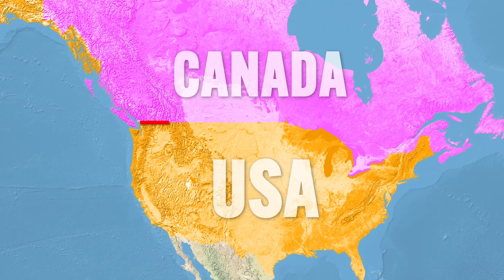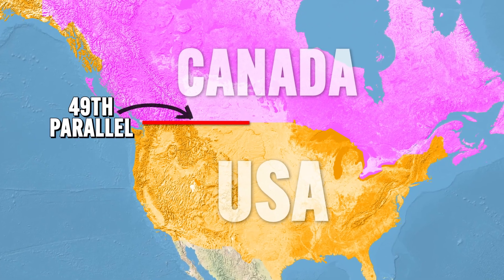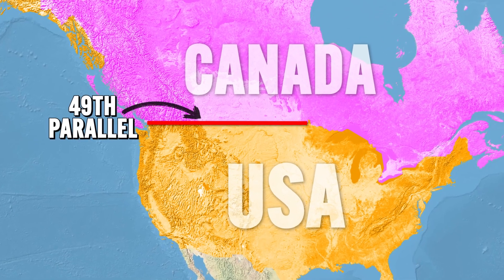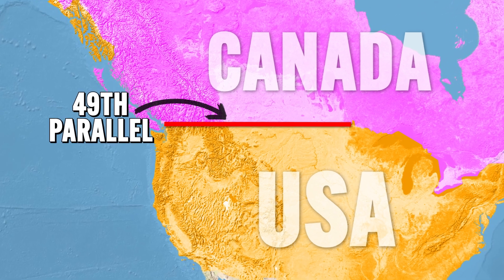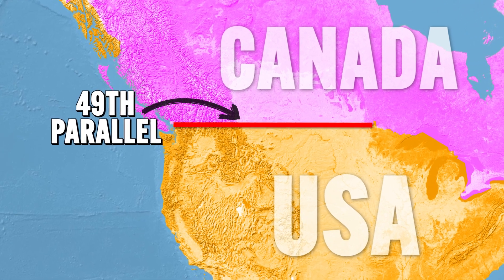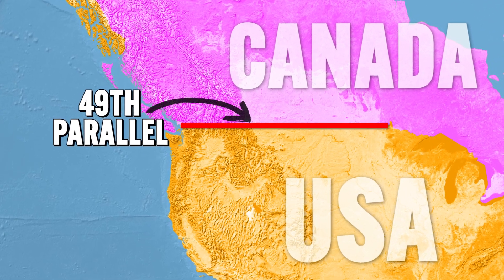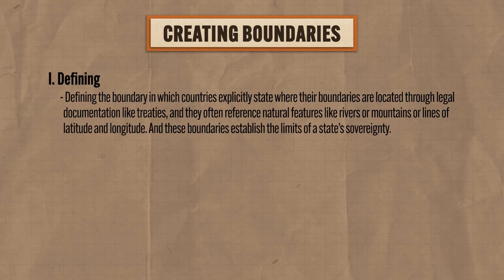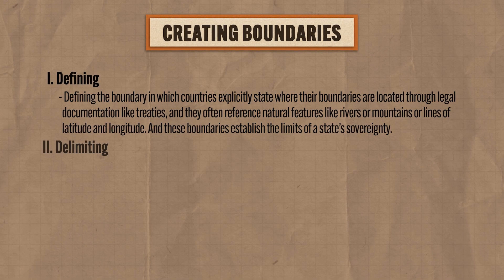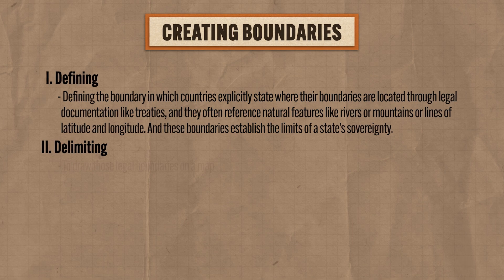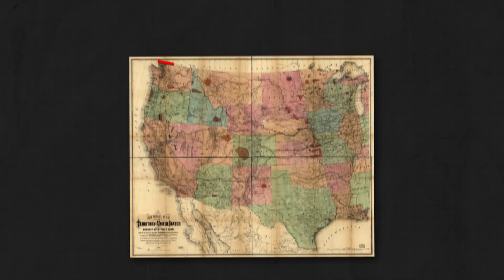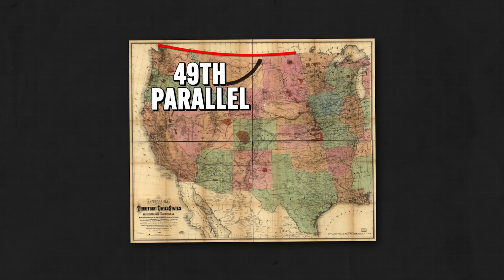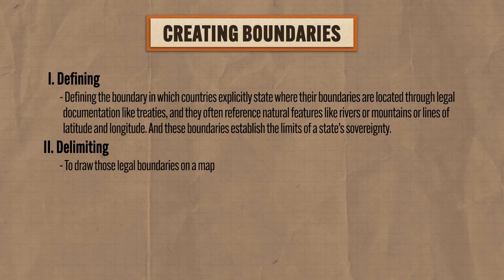For example, the northwestern boundary between the United States and Canada was defined in a negotiated treaty between the U.S. and Great Britain to run along the 49th parallel. Now the second phase is delimiting the boundary, which means to draw those legal boundaries on a map. Here's an official map drawing that boundary along the 49th parallel.